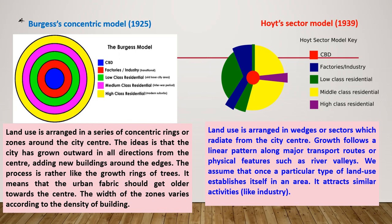Let's look at the Burgess Concentric Model. It is a concentric representation of an urban town or city center. At the middle you have the CBD. Just outside the CBD you have factories, immediately after that the low class residential, then medium class residential, and then high class residential. The land use is arranged in a series of concentric rings or zones around the city center.